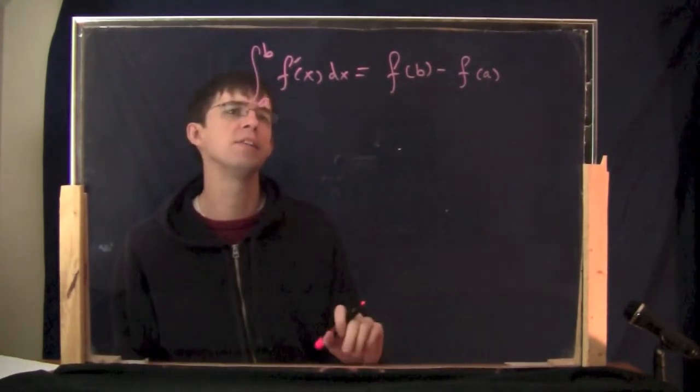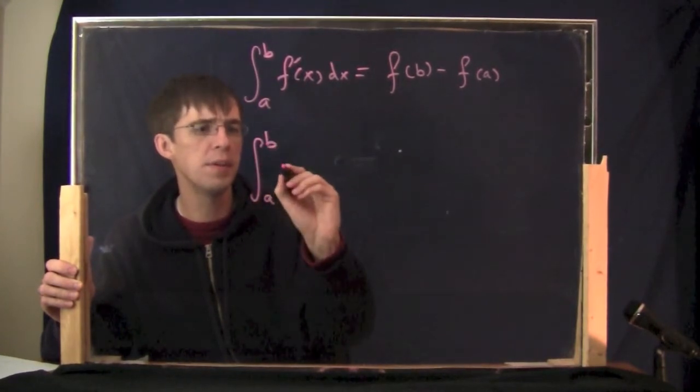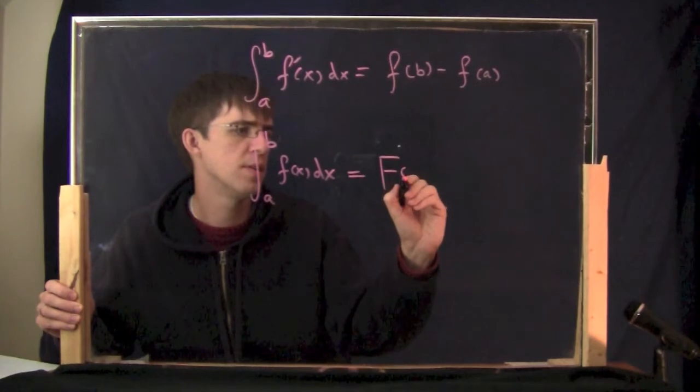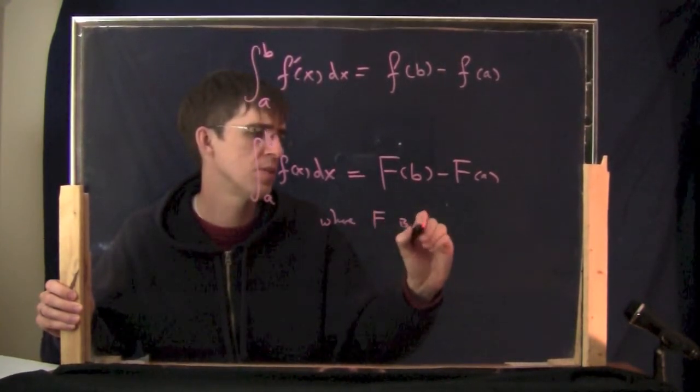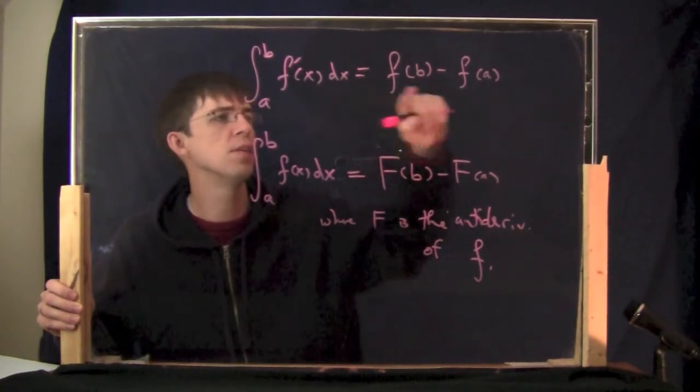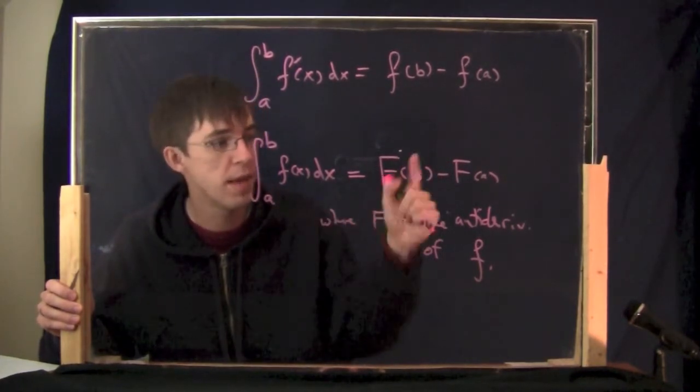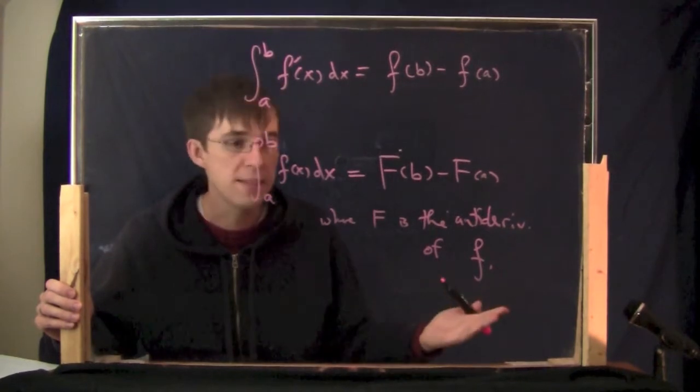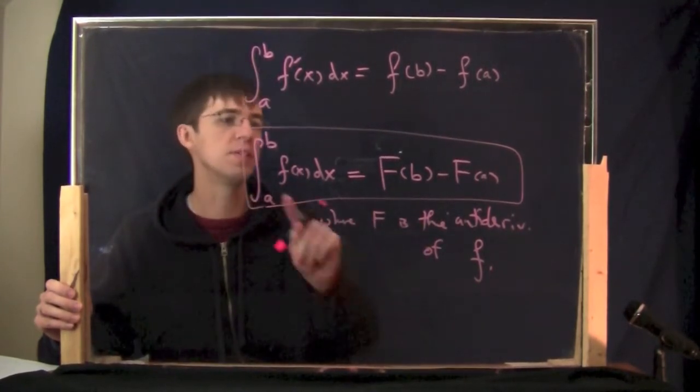Now, this formula, we usually won't write it in this way with the derivative on the inside and the original function over here. Here's the way that I'm going to write the same thing again. If you just have any old function here, the integral from a to b of f of x dx is equal to big F of b minus big F of a, where F is the antiderivative of the little f. Because in this version, I'm writing the same formula again, only here, that is the derivative of that. And here, you have to make it so that is the derivative of that. So the big F, the little f is the derivative of the big F. Another way of saying that is the big F is the antiderivative of the little f.